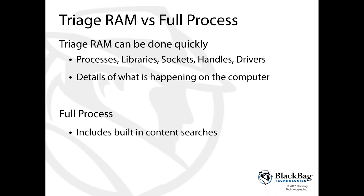Once you have that RAM image, you can bring it into Blacklight just like adding a disk image. You're presented with two options: triage or full processing. Triaging RAM can be done rather quickly and will show you the processes, libraries, sockets, handles, and drivers that are actually being run on that computer at that time — these are parsed out automatically by Blacklight and give you a really good baseline of what's happening on the computer.